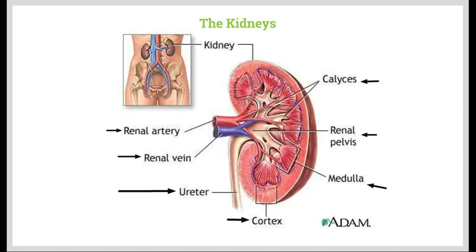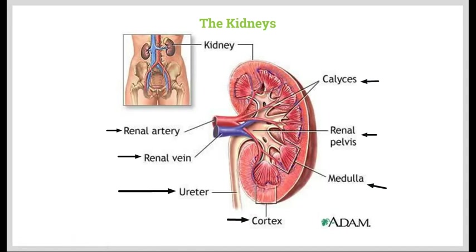The kidneys are part of the urinary system, and in mammals, the two kidneys are found close to the back wall of the abdominal cavity on either side of the vertebral column. There are a number of different structures here — this is just a little introduction, and then we're going to have a look at each one in more detail as we move through.